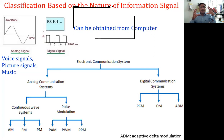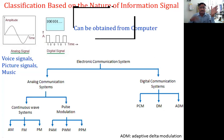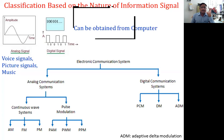Based on the type of information signal, we have two types: analog signal and digital signal. An analog signal varies continuously with time; examples are voice, music, and sound. For digital modulation, the wave varies in a discrete manner — there is a binary sequence of ones and zeros. Digital signals are generated by computers.